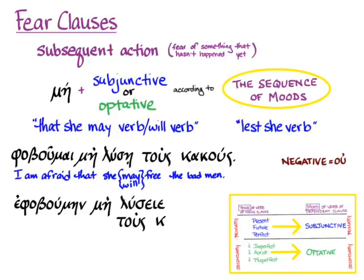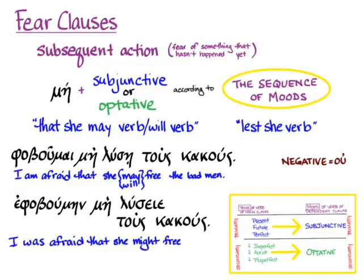Another example in secondary sequence: φοβούμην μή λύσαι τοὺς κακούς — 'I was afraid that she might free the bad men,' or 'lest she free the bad men,' or 'I was afraid that she would free the bad men.'